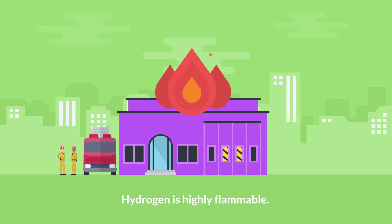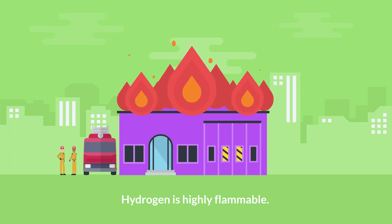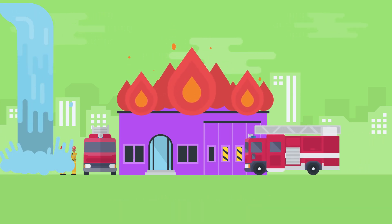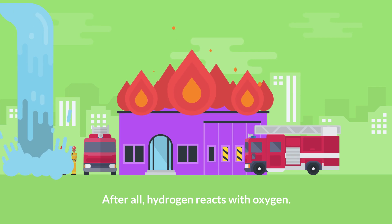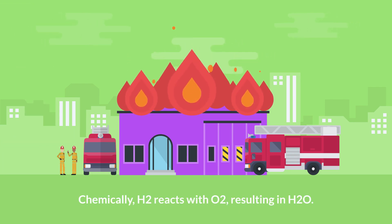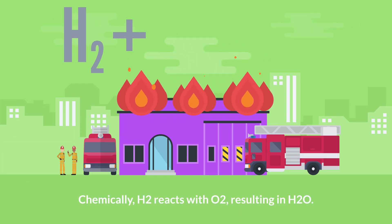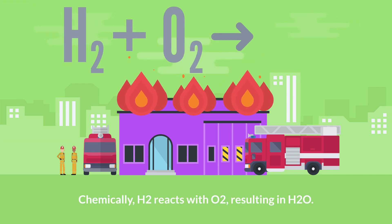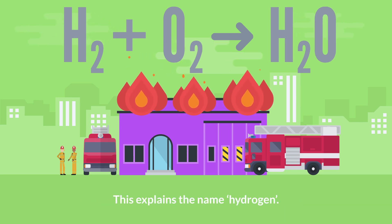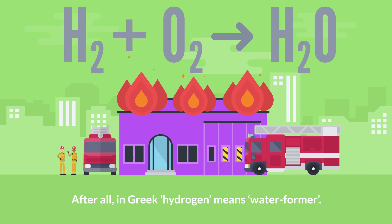Hydrogen is highly flammable. When burned, hydrogen forms water. Hydrogen reacts with oxygen — chemically, H2 reacts with O2, resulting in H2O. This explains the name hydrogen; after all, in Greek, hydrogen means water-former.